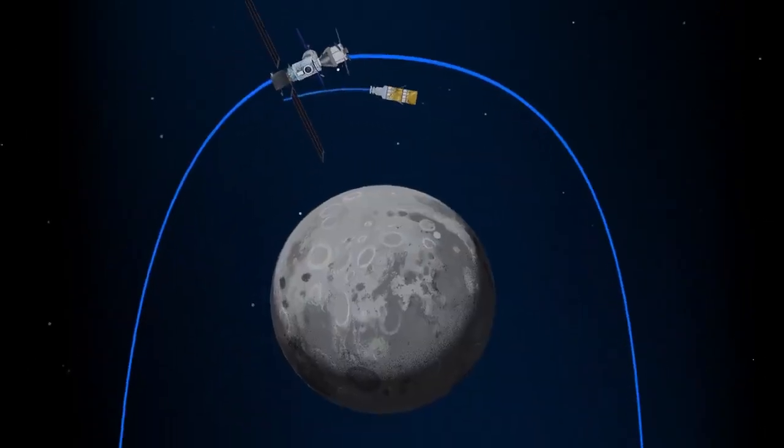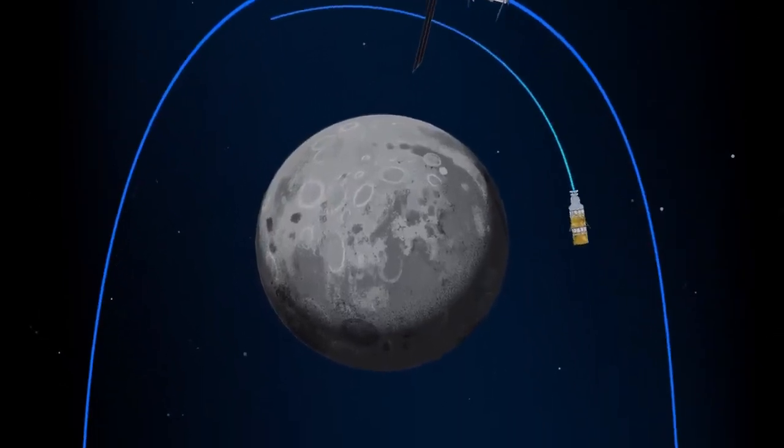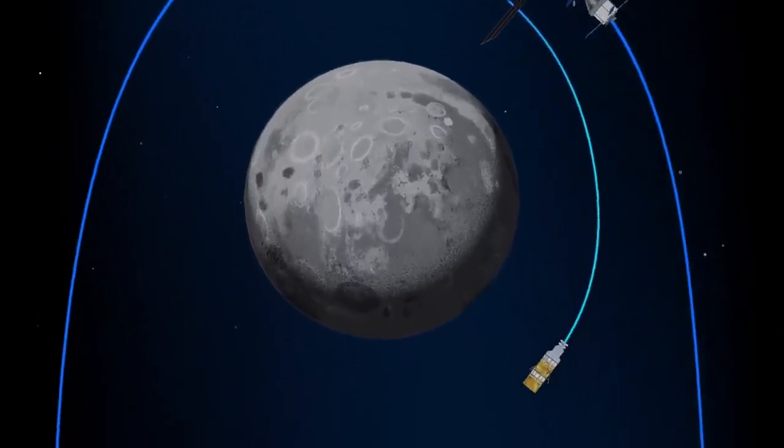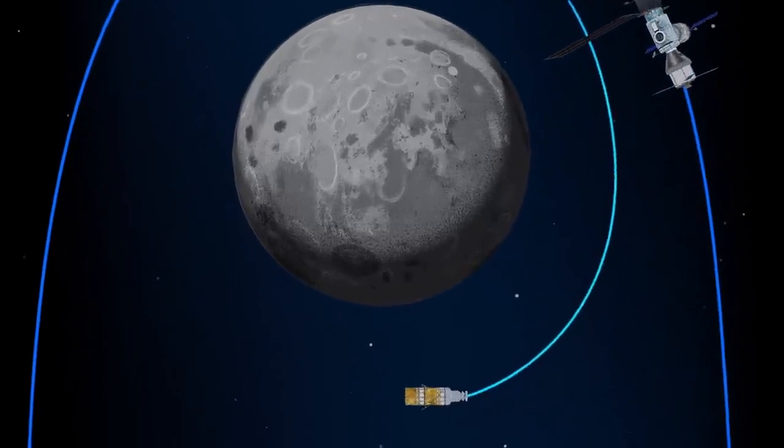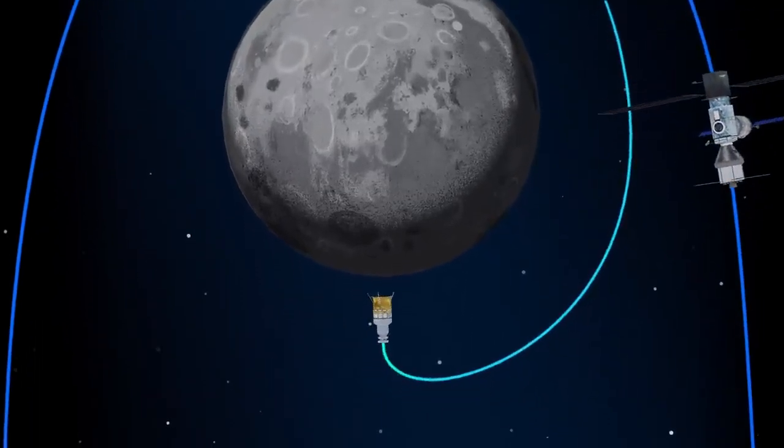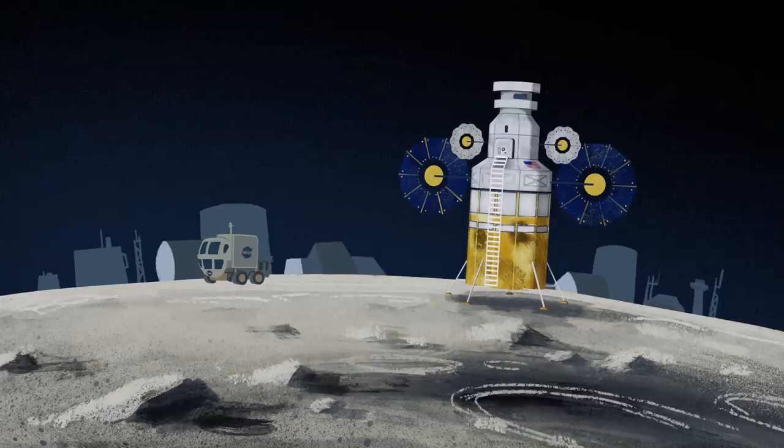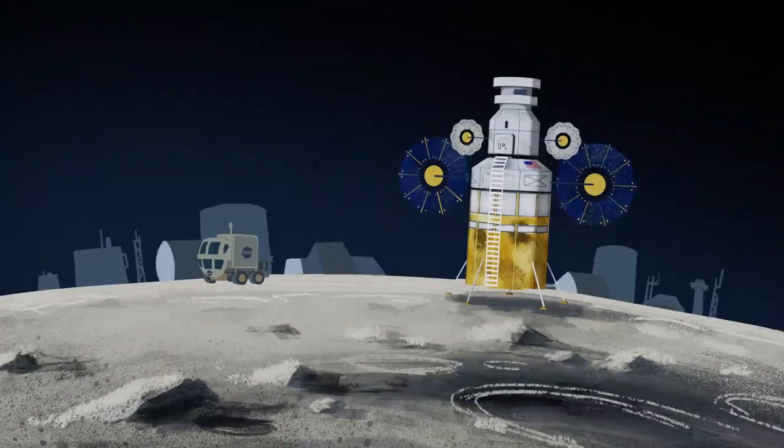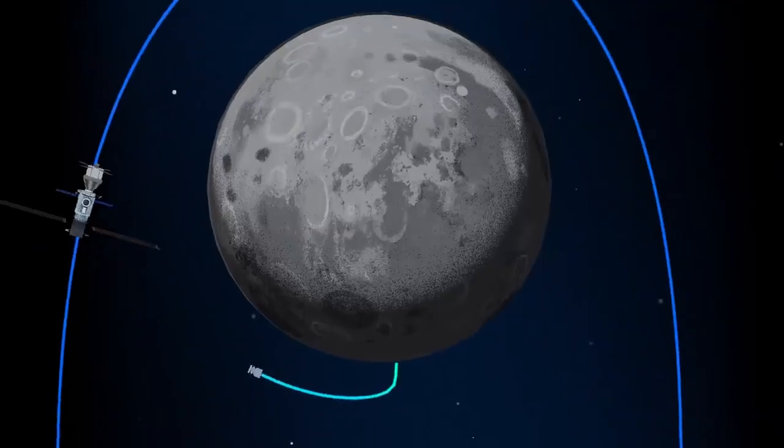The lunar lander system itself is built for three unique steps. Descending from the halo orbit of Gateway down to a low lunar orbit, descending from low lunar orbit to the surface, and once the lunar mission is complete, launching from the surface of the Moon and ascending all the way back to the orbiting Gateway.